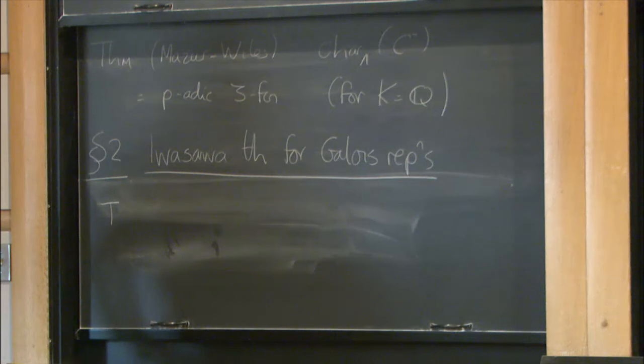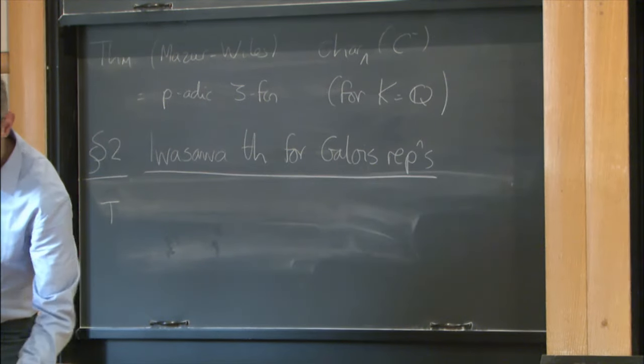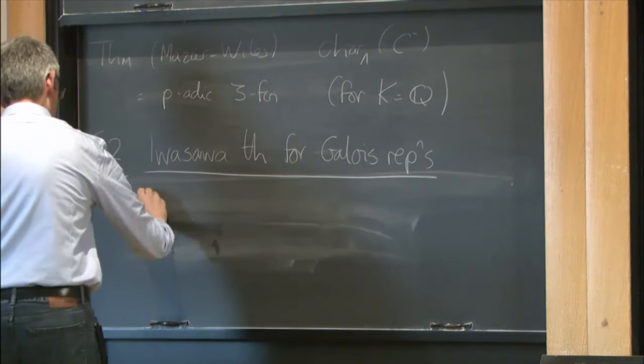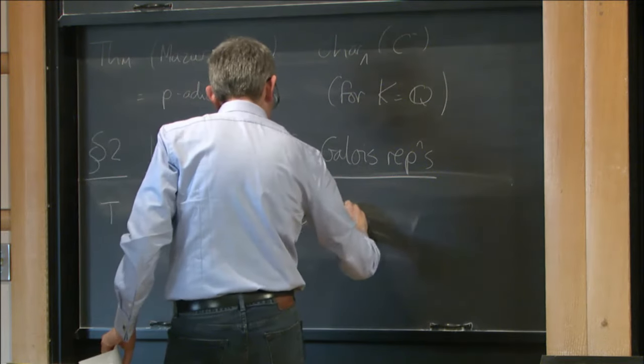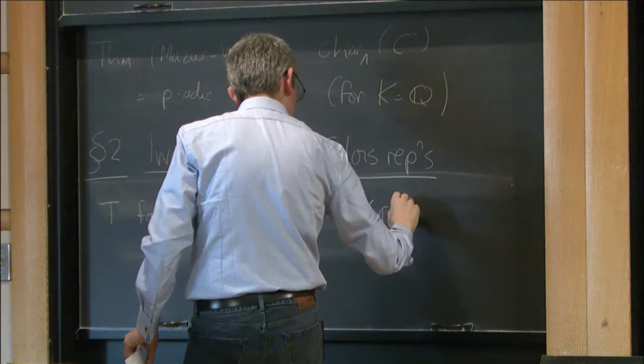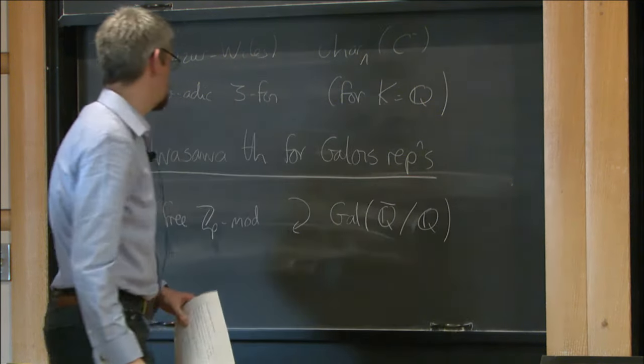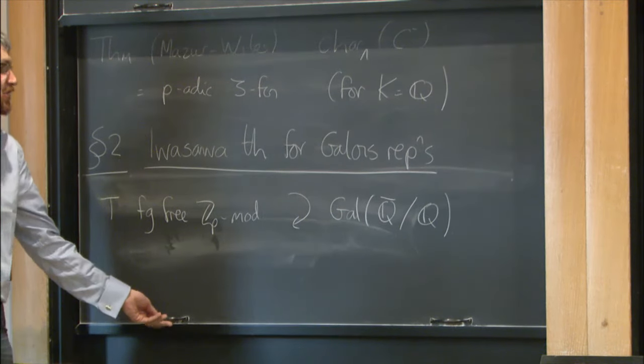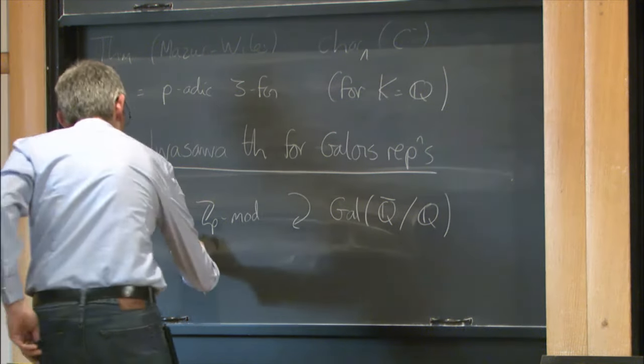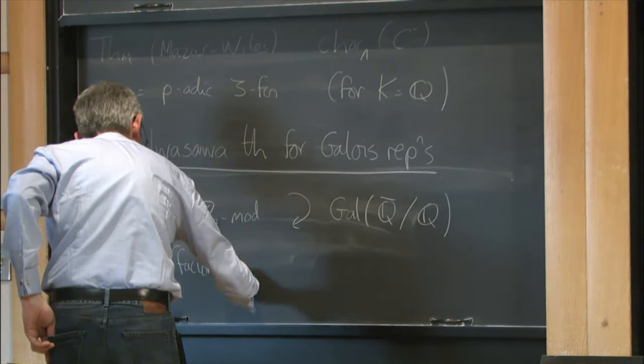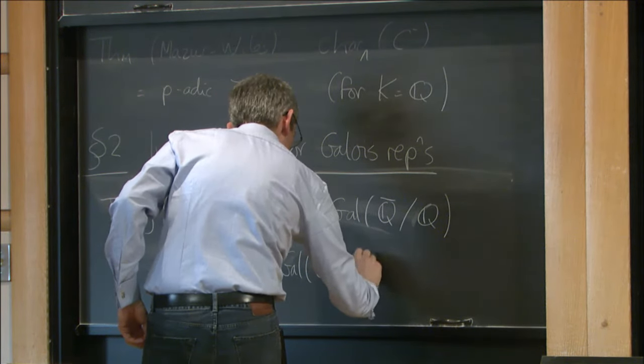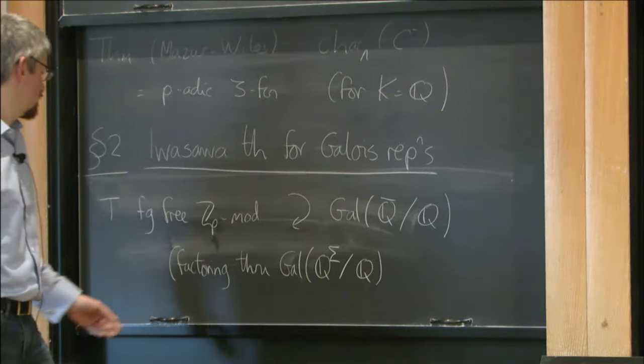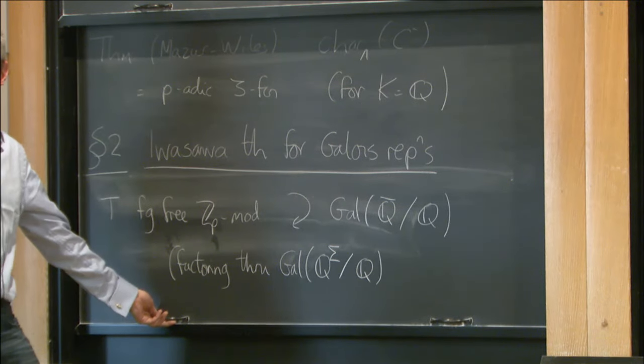So I want to set up some analogue of this for very general arithmetic objects over number fields and the correct formalism is to use representations of Galois groups. I'm going to stick to the case of the base field being Q. So I want to take a finitely generated free ZP module with a continuous action of the absolute Galois group of Q. And just a technical point.